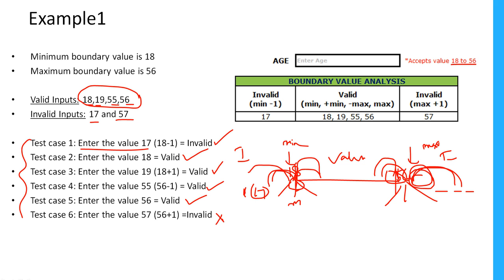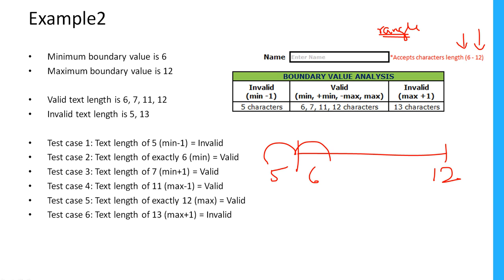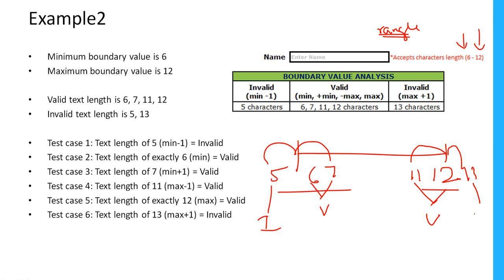This covers the complete scenario. Now let's see one more example. Here I have a text box which will accept 6 to 12 characters. Boundary value analysis always talks about a range. The minimum is 6 and the maximum is 12 characters. The boundaries are: minimum minus one is 5, minimum plus one is 7, maximum minus one is 11, and maximum plus one is 13.